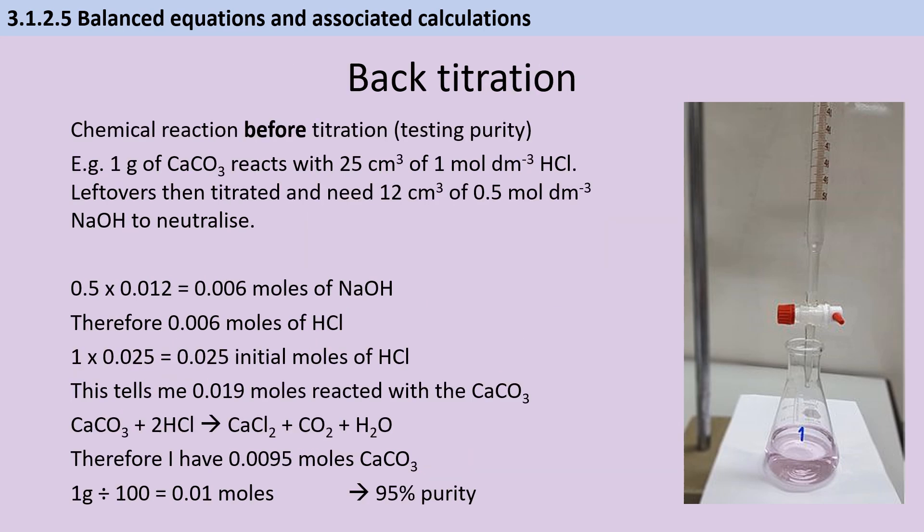To assess the percentage purity of a solid, we can't use regular titration, so what we need to do is a chemical reaction first before we perform that titration, and this whole process is called back titration. So for instance, if I take solid calcium carbonate and I react that with some acid, before I do that reaction I can calculate the moles of acid in that acid. And what I then do is I take the leftovers and I use that in a titration with sodium hydroxide to work out how many moles of acid are still in that solution. The difference between those two numbers tells me how much acid has been used up in the initial reaction with the calcium carbonate.